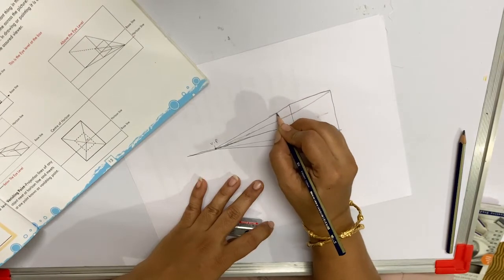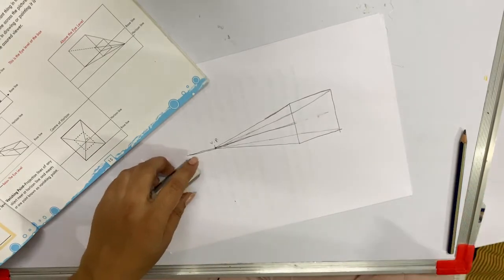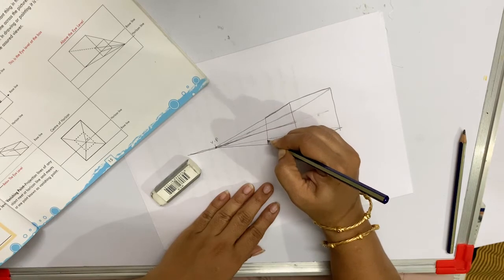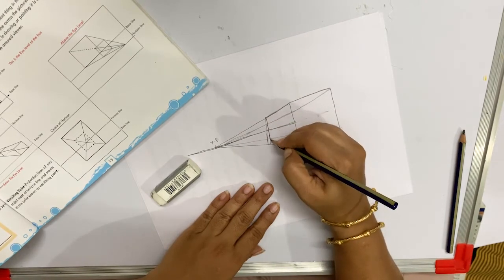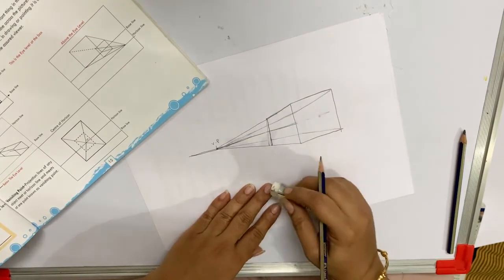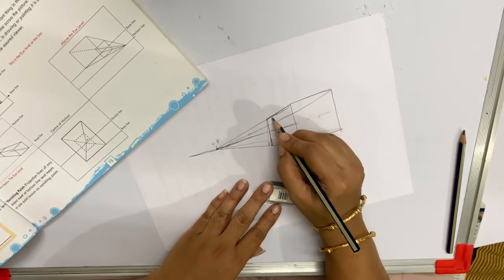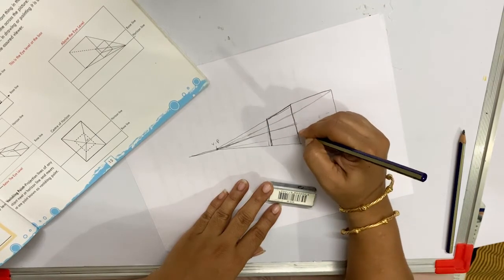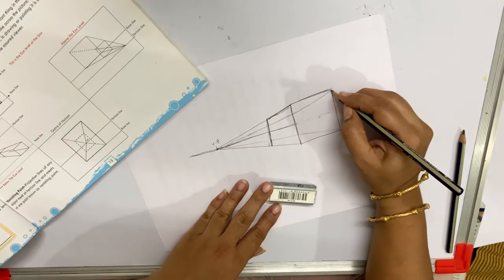From here we can draw our cube by making straight vertical lines. So this is how it gives you the effect of a simple square now turning into a cube by using this one-point perspective.